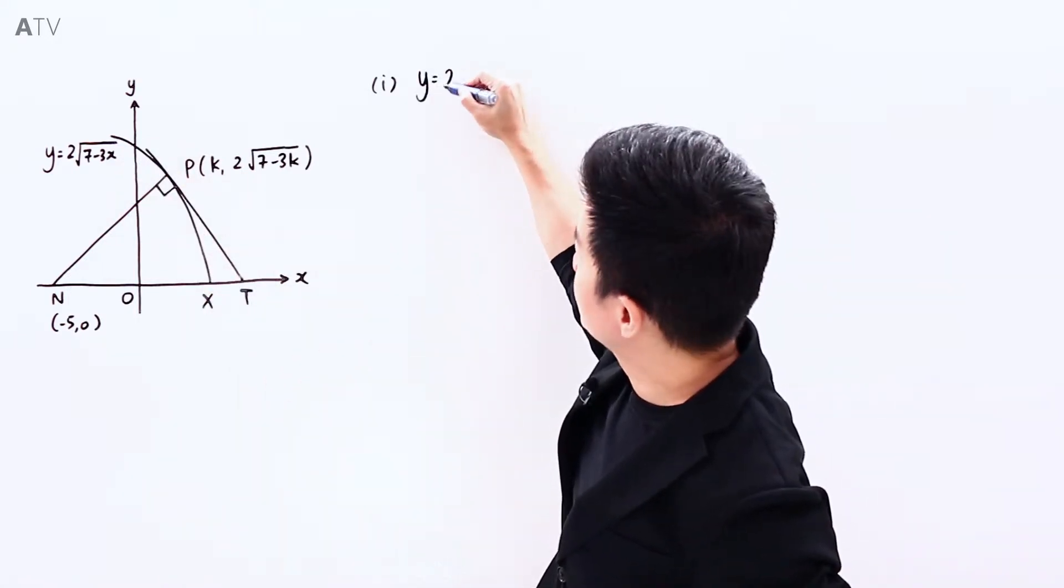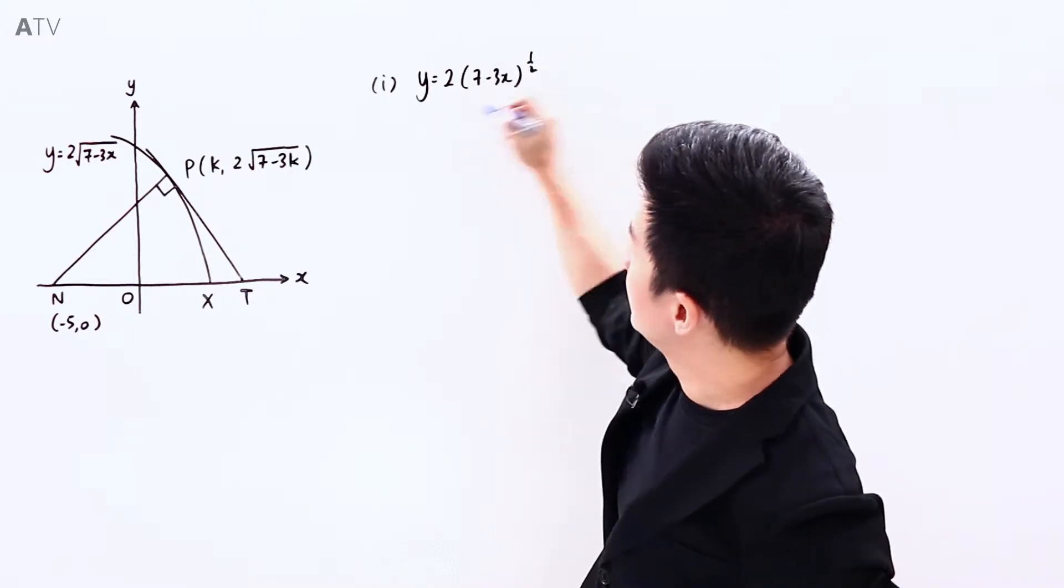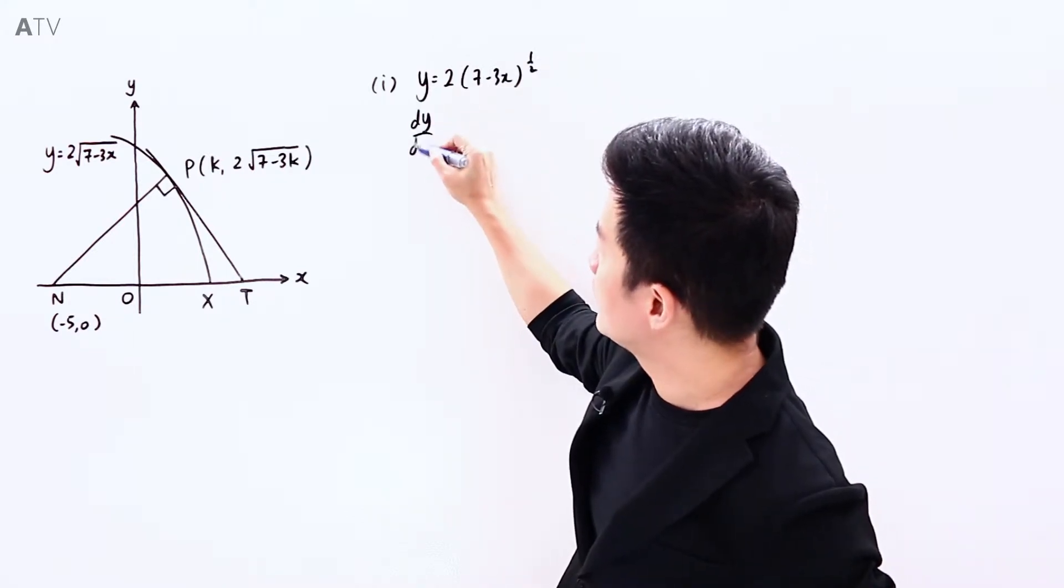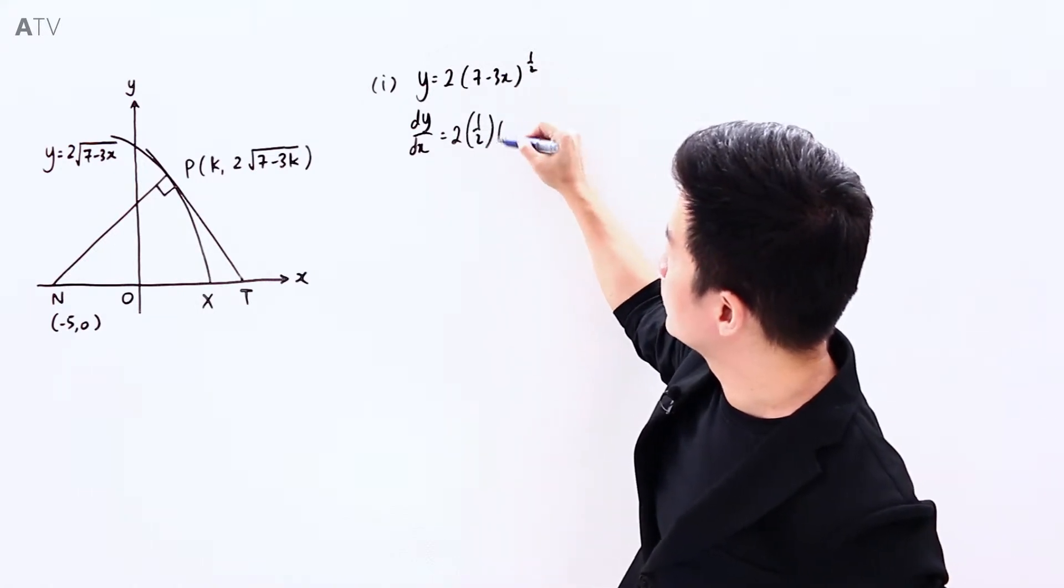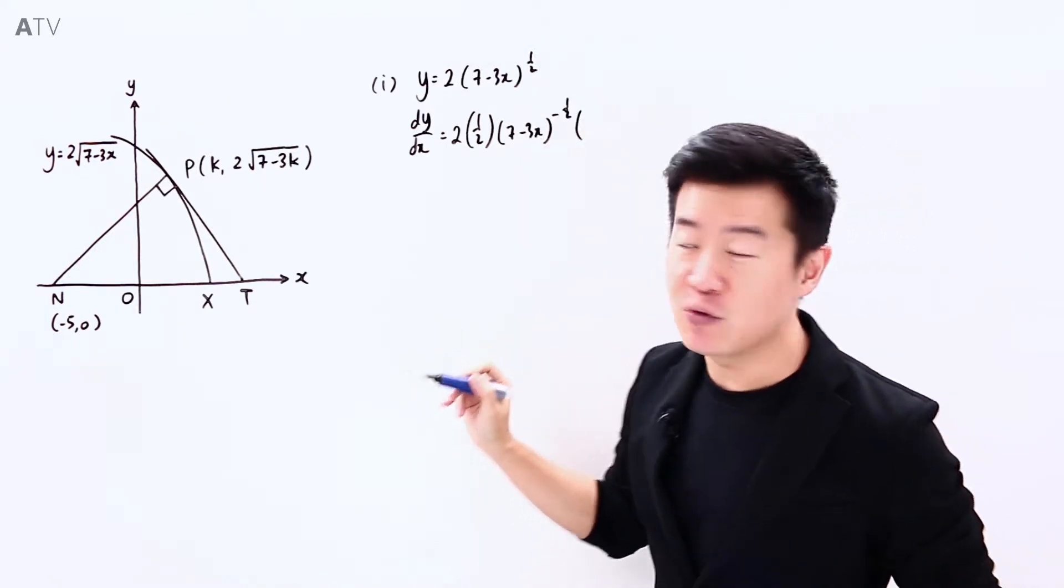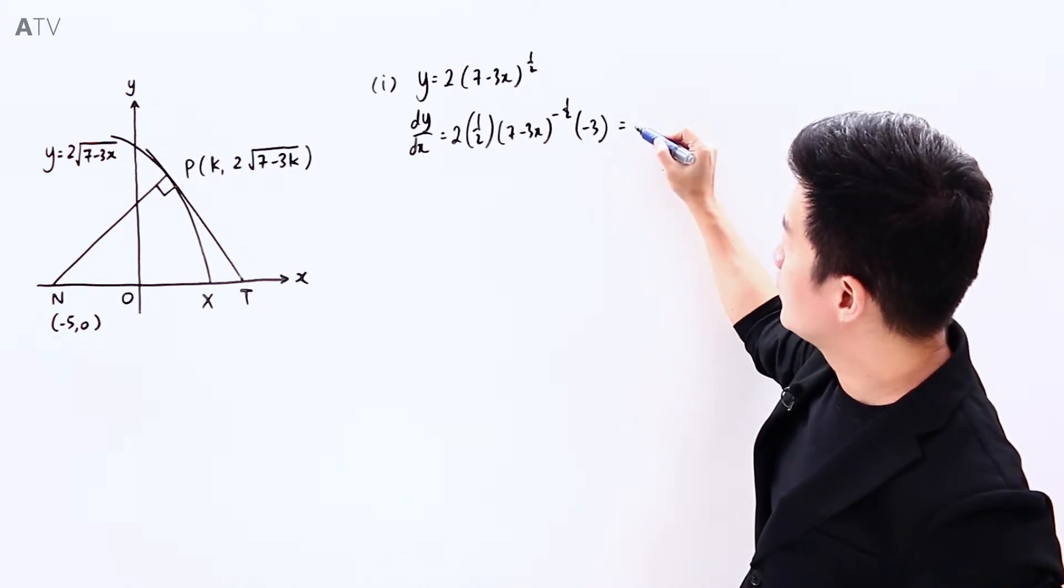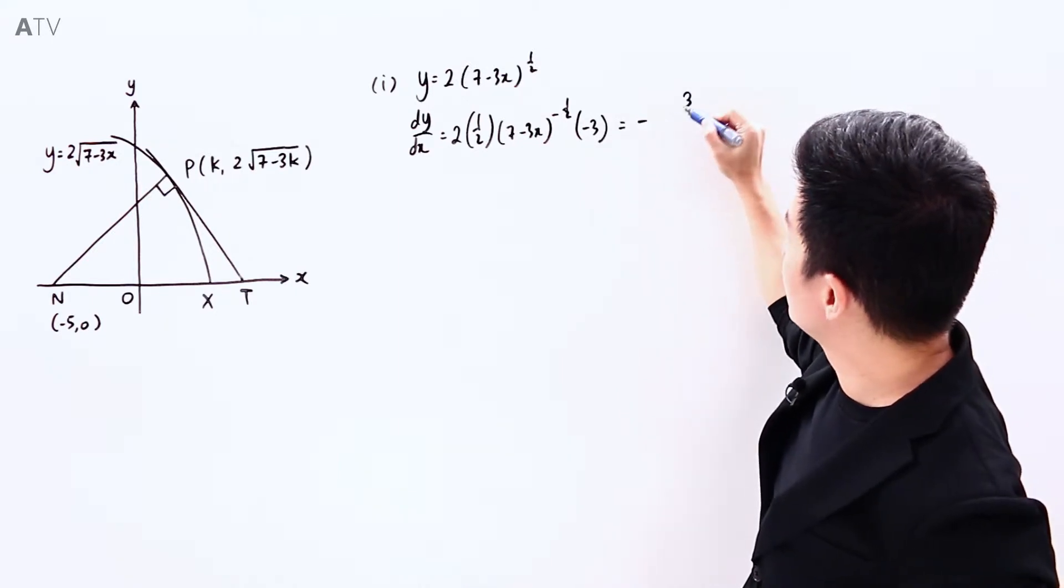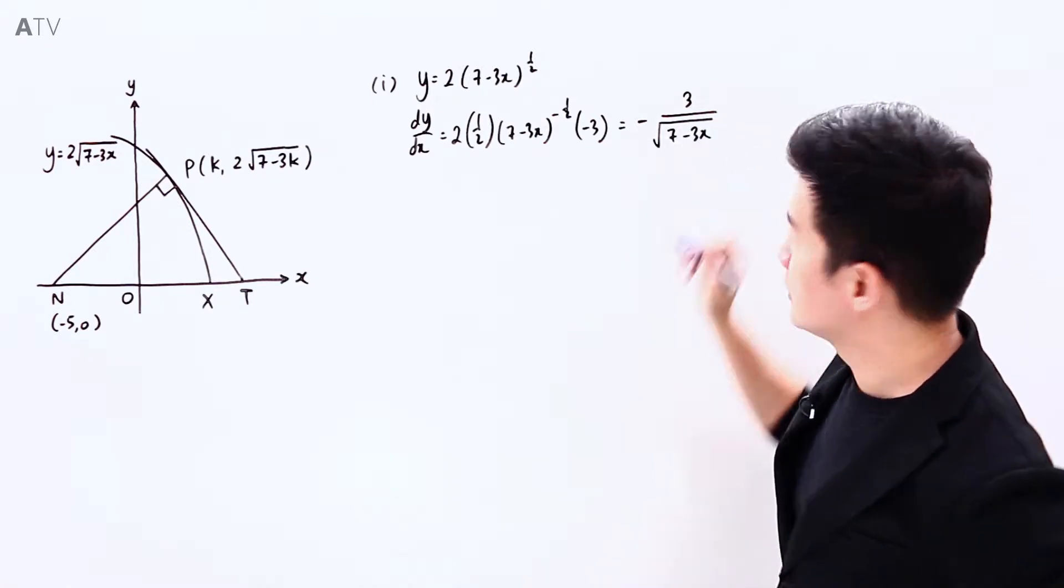Let me rewrite the equation as 2 times (7 minus 3x) to the power of half. Which means that dy/dx is going to be 2 times half, so (7 minus 3x) to the power of minus half. Applying the chain rule, this will be minus 3. And this is going to be equal to negative 3 over square root of (7 minus 3x).